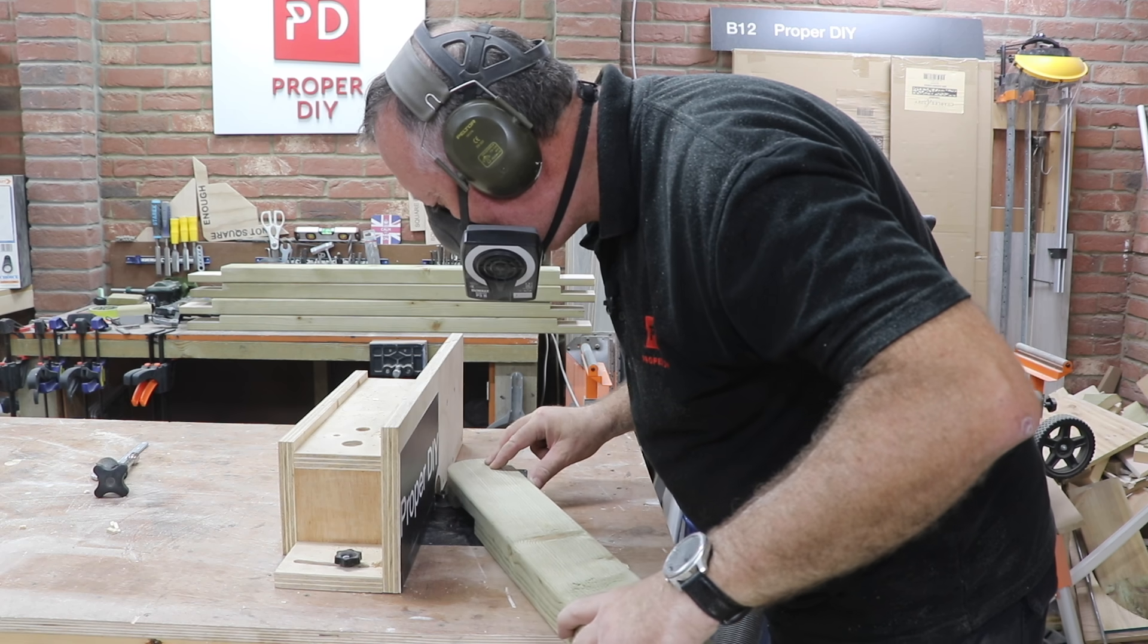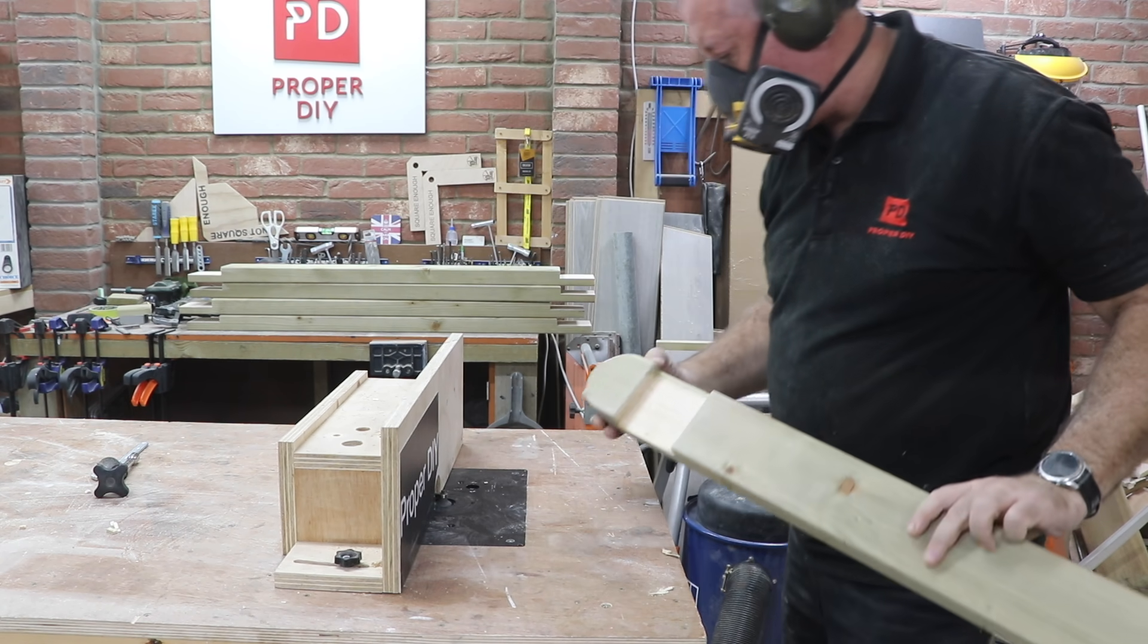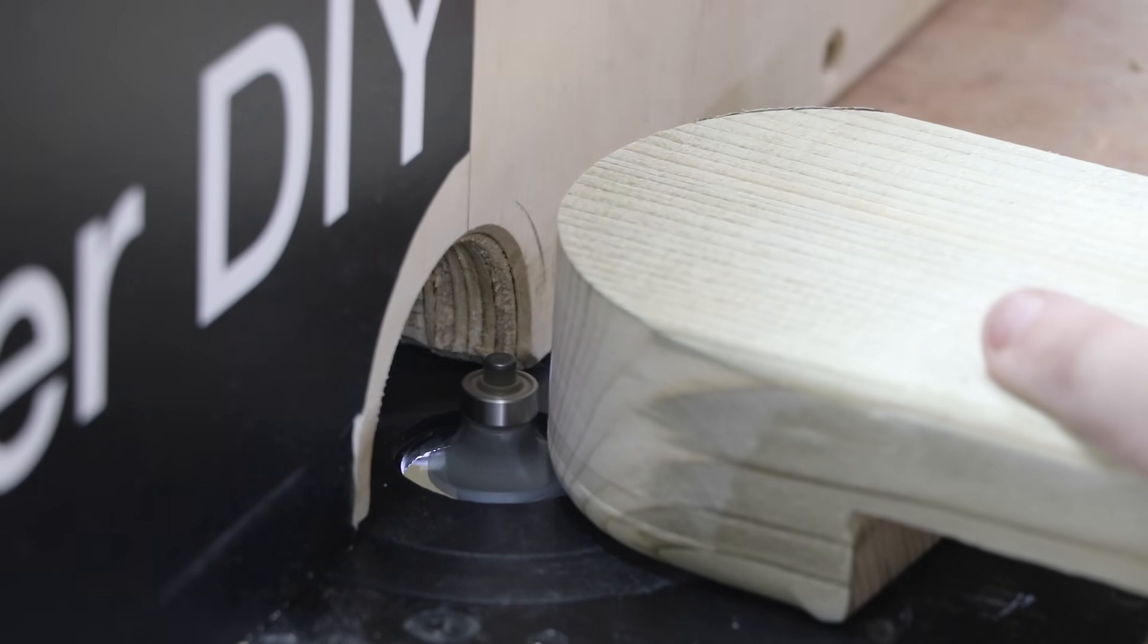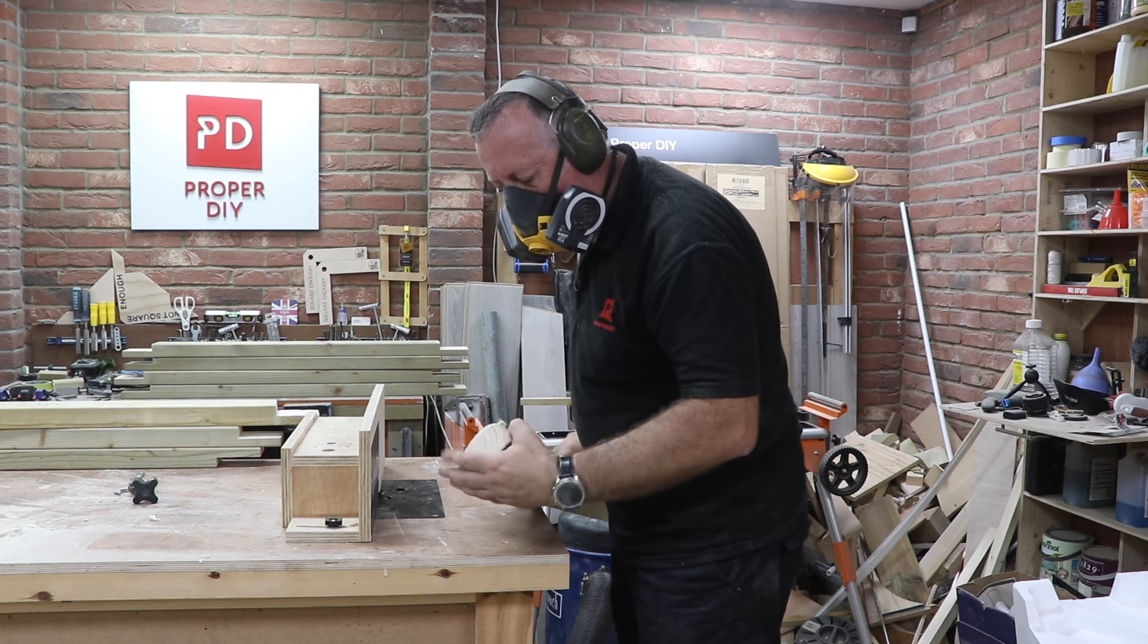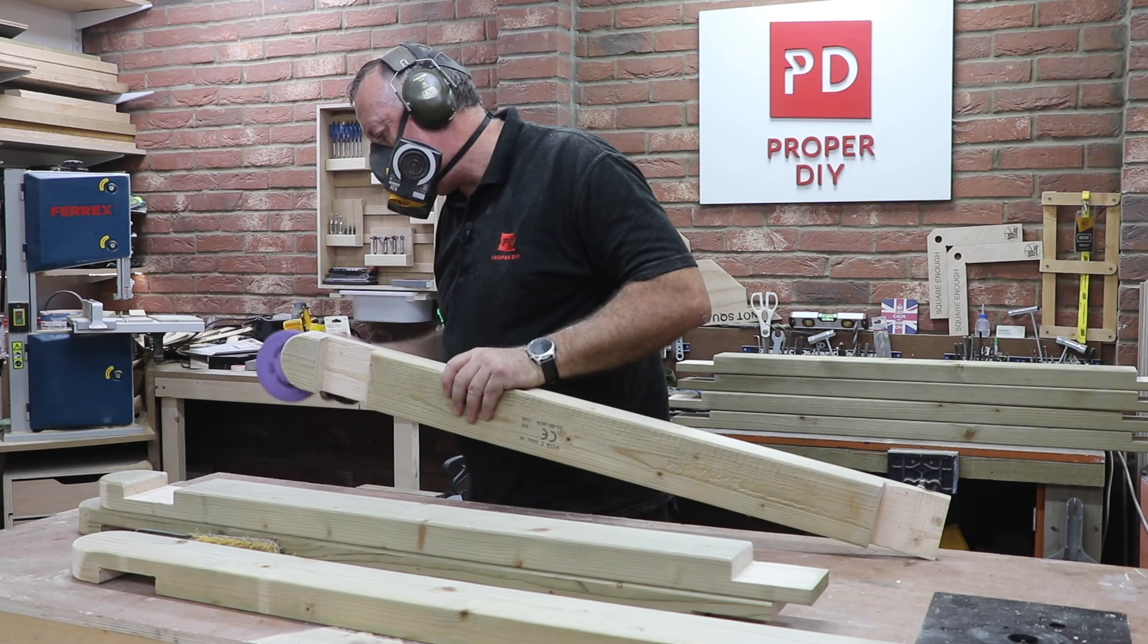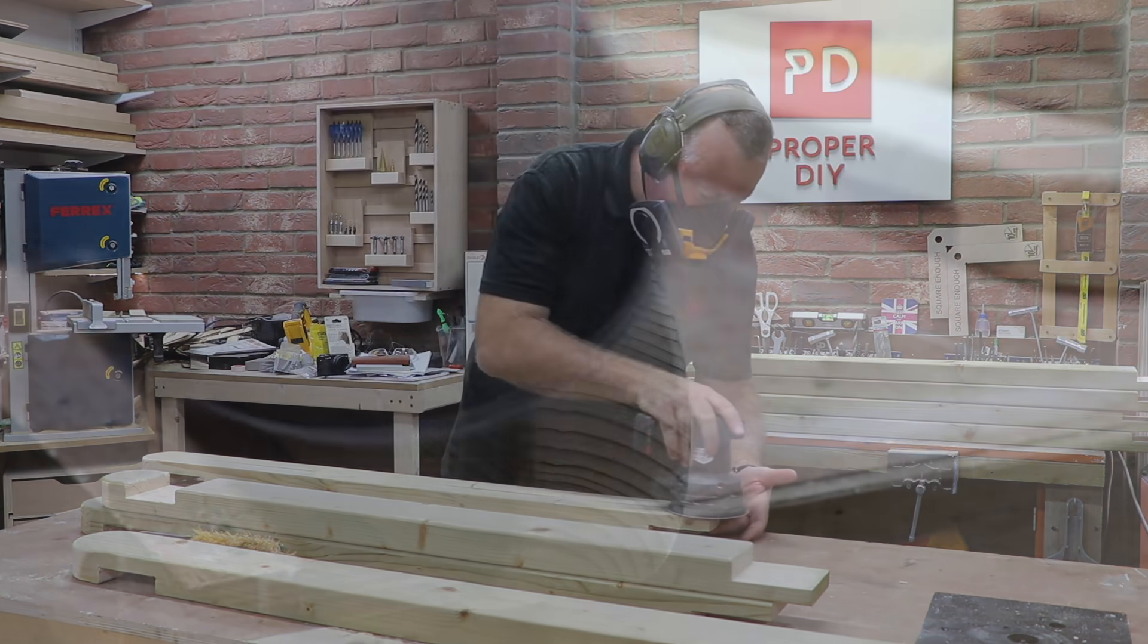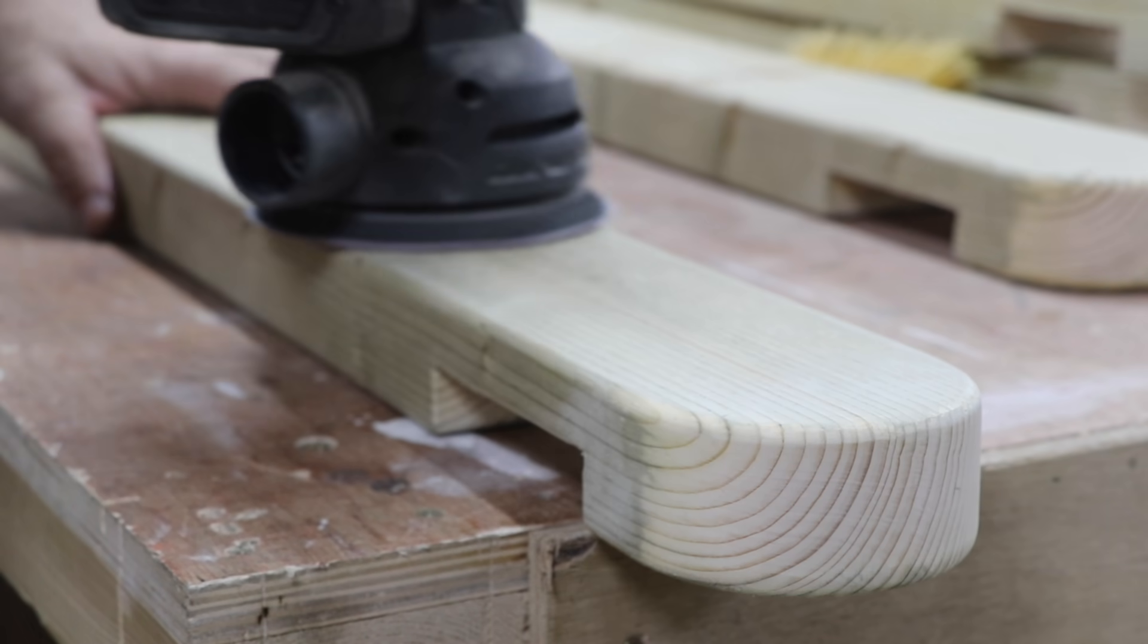To round over this edge, I use my router with a very small round over bit to replicate the edges you get on this C16 wood. After everything getting a good sanding, I was then in a position for a glue up.